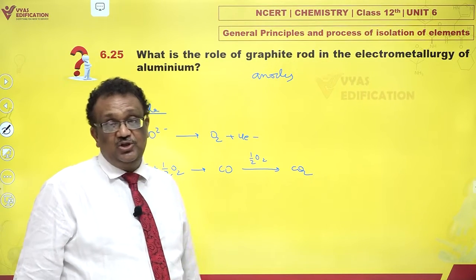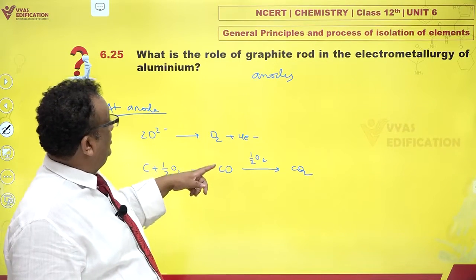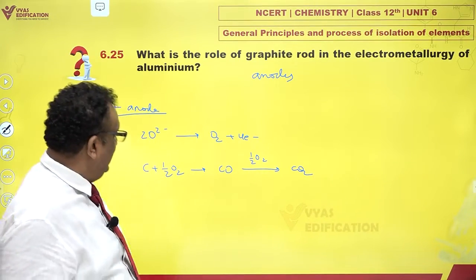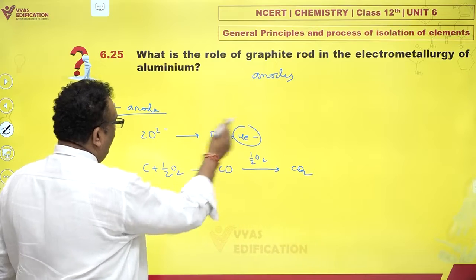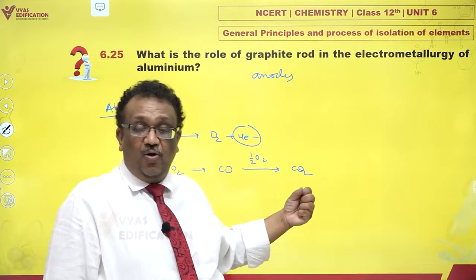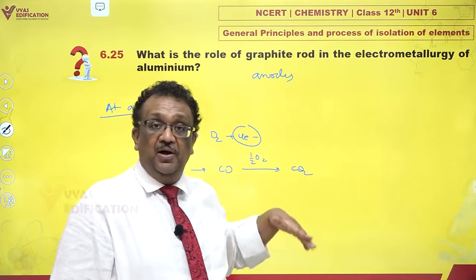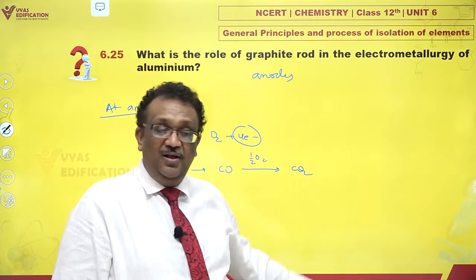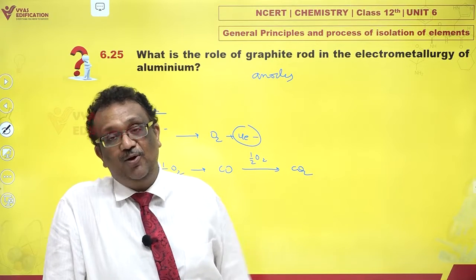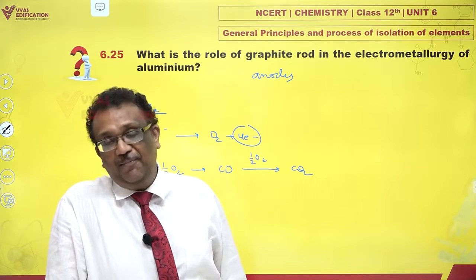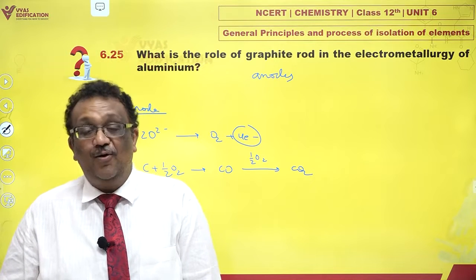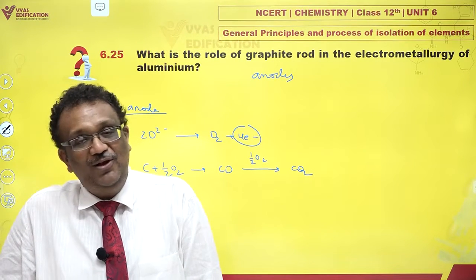But the role is that they transfer electrons. The electrons which are released by oxide ions are taken up by the graphite rod, and even though it is burning, these electrons are transferred to the other side at the cathode so that the reduction of aluminium can also happen. That, my dear, is the role of graphite rod in electrometallurgy of aluminium. Thank you.